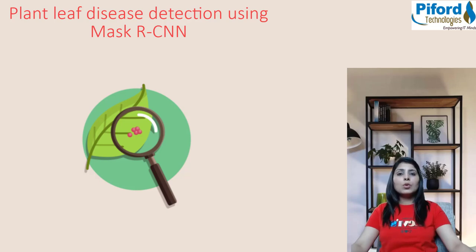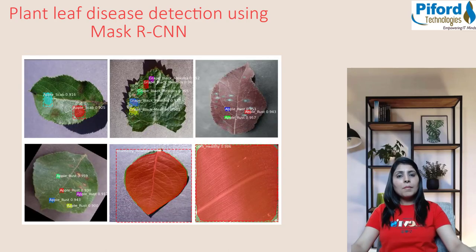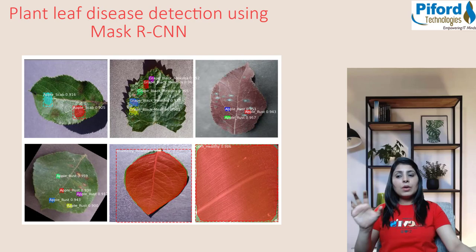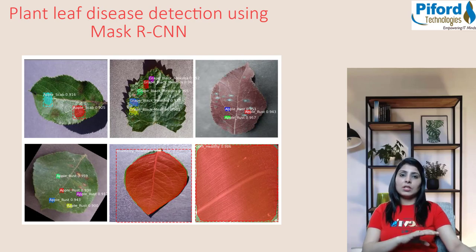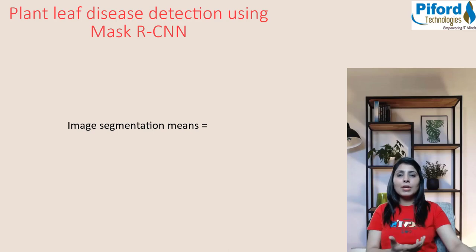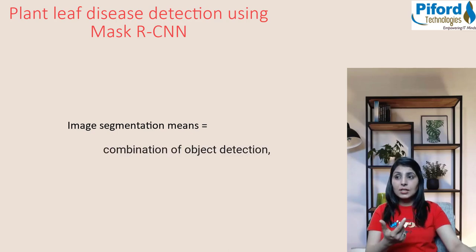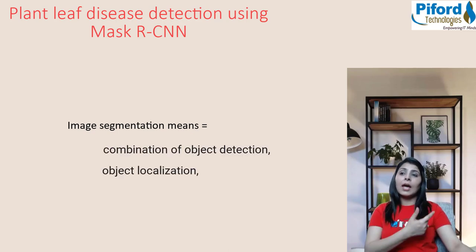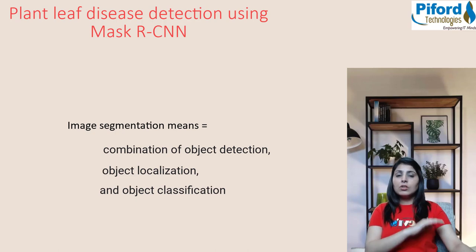Hello everyone, this is Arohi and welcome to my channel Code with Arohi. In this video I'll show you how to implement plant leaf disease detection using Mask RCNN. Mask RCNN is an image segmentation model, and image segmentation simply means the combination of object detection, object localization, and object classification.